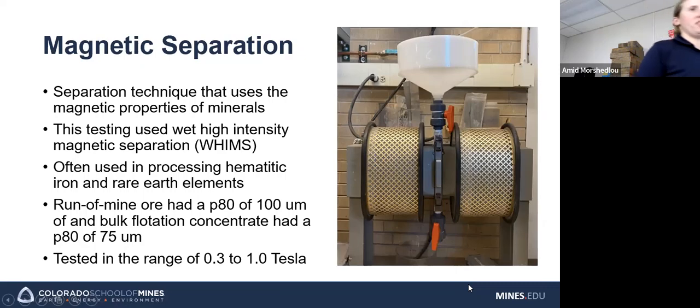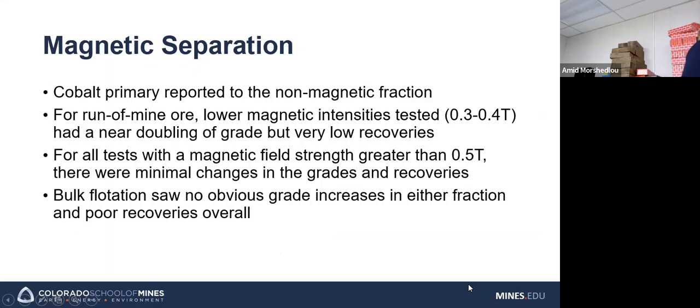So with all testing that we did, we ran two different ores. A run of mine ore that had a particle size with an 80% passing of 100 microns, and then a bulk flotation concentrate that had a P80 of 75 microns. And then tests with this were run in a magnetic field range of 0.3 to 1 tesla. So testing is still ongoing with this, but some primary results that we've seen is that the cobalt primarily reports to the non-magnetic fraction, which was expected as, in this case, most of the cobalt is within pyrite, has substituted in for some of the iron atoms, and pyrite is non-magnetic. So that's about what we expect.